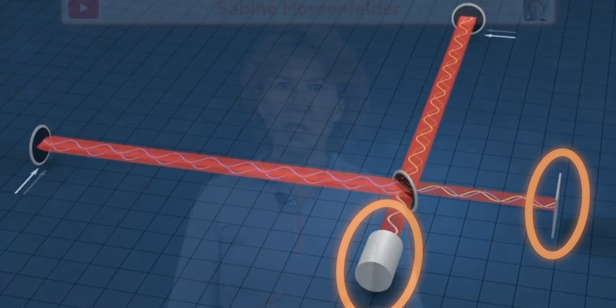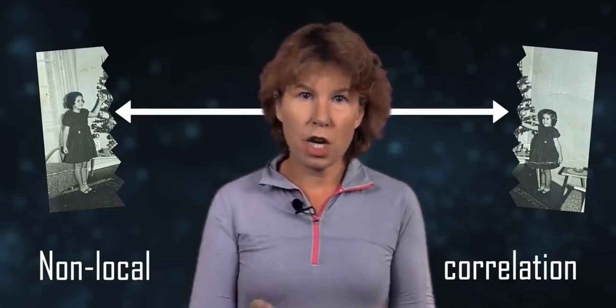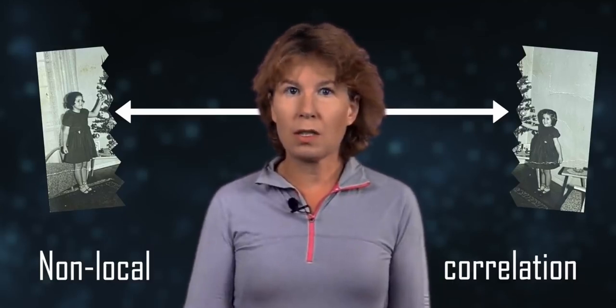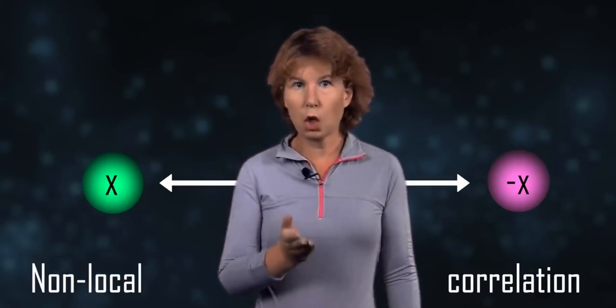If I rip a photo into two and ship one half to New York, the two parts of the photo are now non-locally correlated — they share information. But that correlation was created locally, so nothing weird about that. Entanglement is also locally created. Suppose I have a particle with a conserved quantity that has value zero. It decays into two particles. All I know is that the shares of the conserved quantity for both particles have to add to zero. So if I call one of the shares x, then the other one has to be minus x, but I don't know what x is. This means these particles are now entangled — non-locally correlated, but the correlation was locally created.